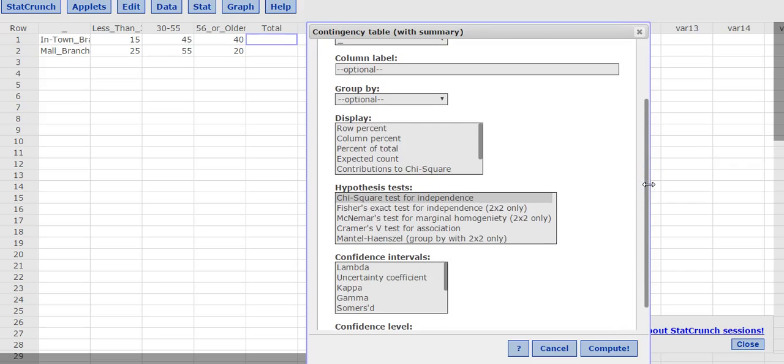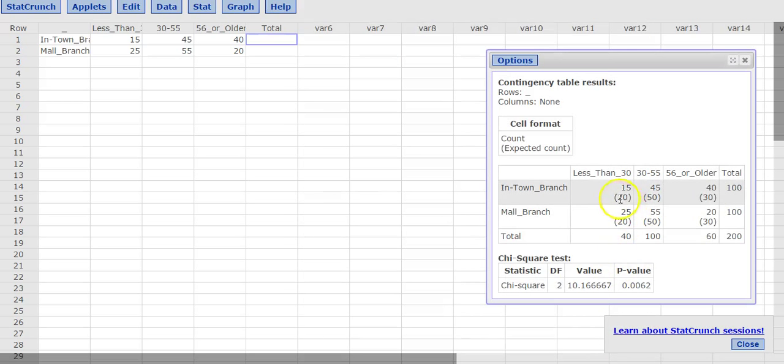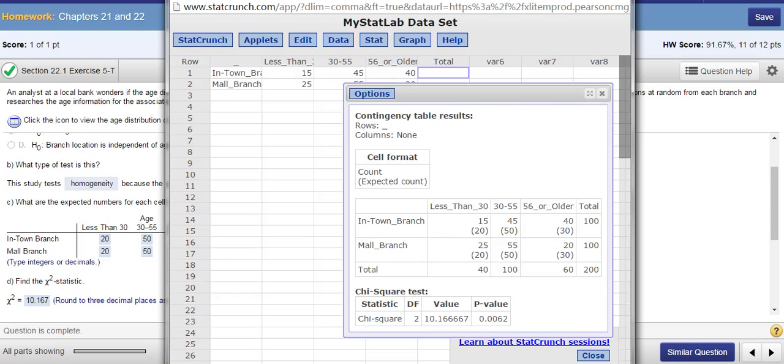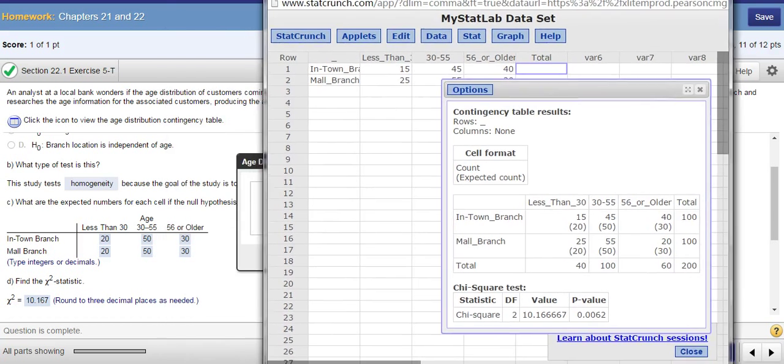One more thing. Because you're looking for expected value for each cell, under display, you're going to click on expected count. And then you compute. Here, the one outside of parentheses is the observed value. And the one within the parentheses is the expected value. So that's how you do the expected count in StatCrunch.